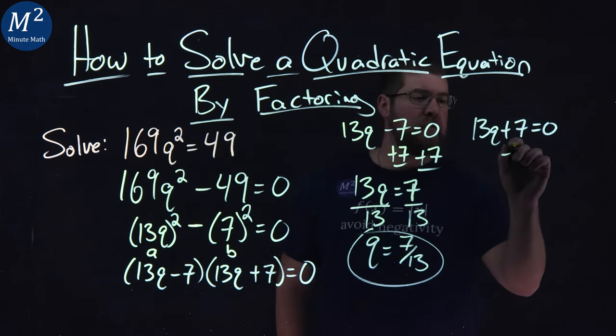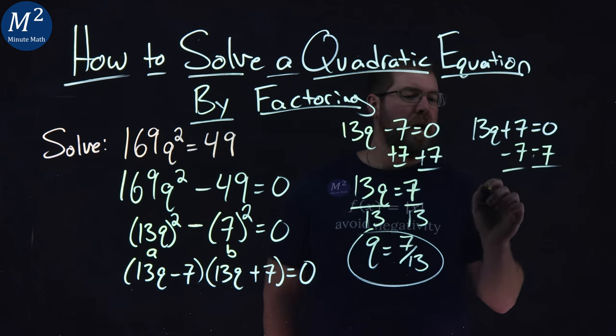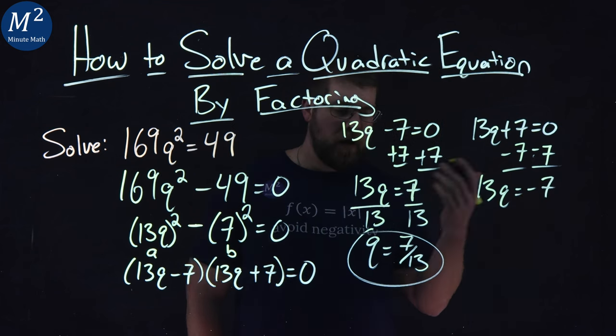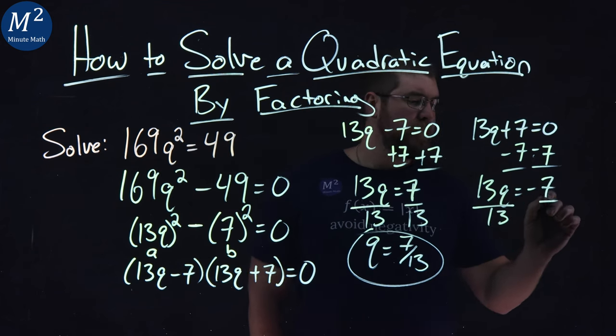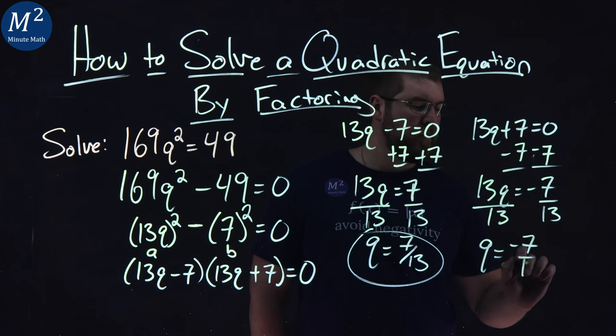The second equation, same idea. We subtract 7 from both sides, and we're left with 13q = -7. From there, divide it by 13, and q is also equal to -7/13.